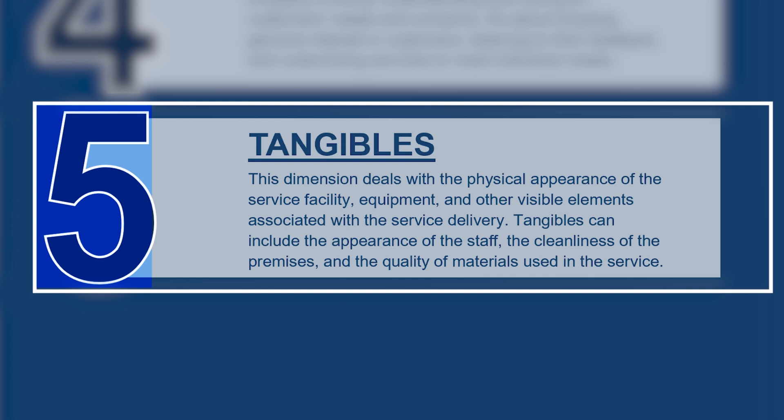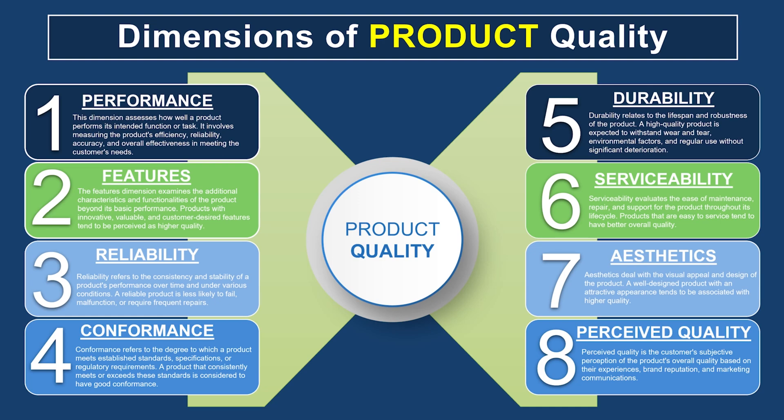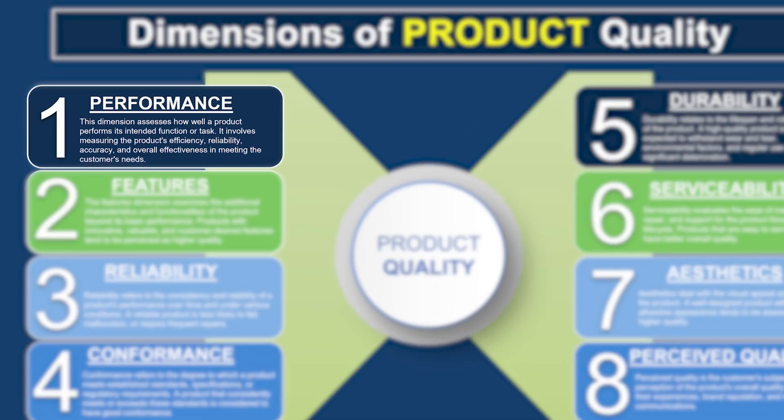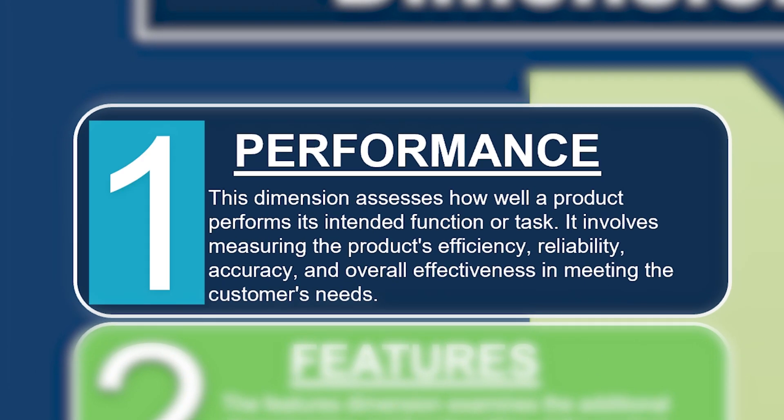The last service quality dimension is tangibles. This aspect is not so much specific to the service itself but more about where the services take place — the appearance of the facility, equipment, and personnel, and how they communicate. Is your hospital or doctor's office dirty and in need of cleaning? Do you treat staff poorly when customers are present? These tangibles are about what you see from that service experience.